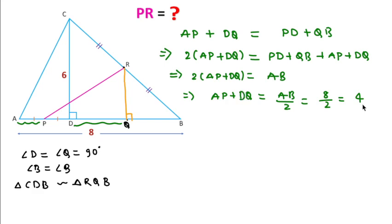Now we can also write PD in place of AP, since AP and PD are equal. So PD + DQ = 4.